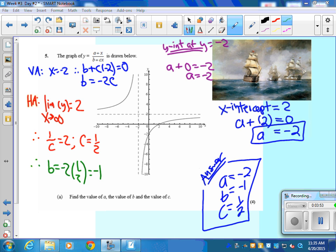So I know what a is. Now I just have to find the other ones. X-intercept. That's where the y value equals 0. So a plus, and this is x is 2, a plus 2 has to equal 0. So a is negative 2. So you see this nice little confirmation of those two.